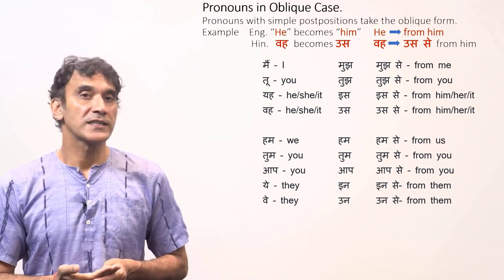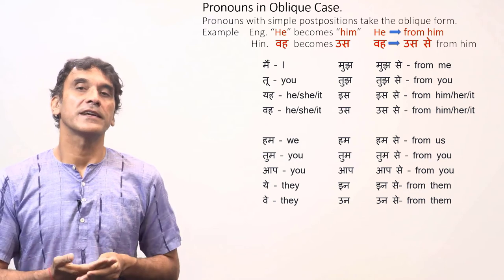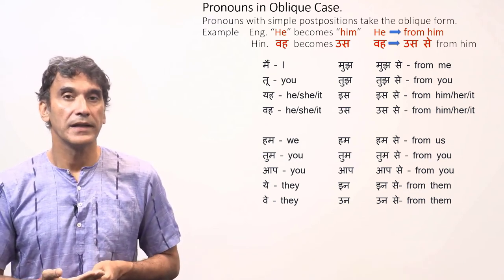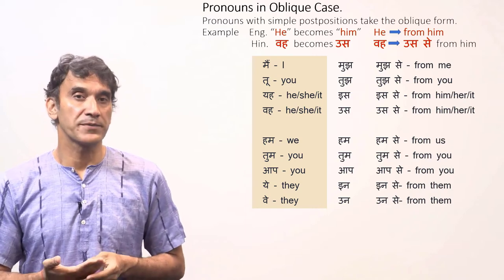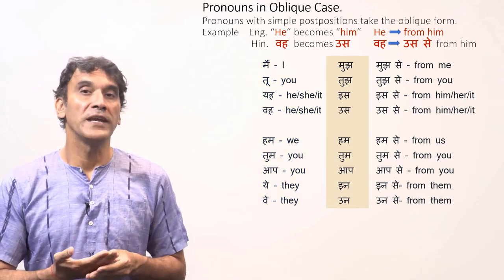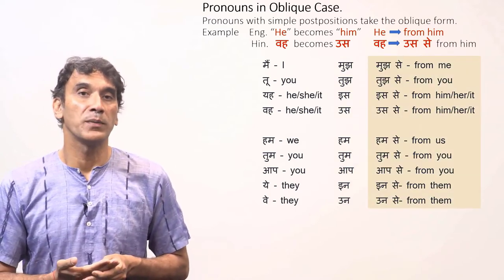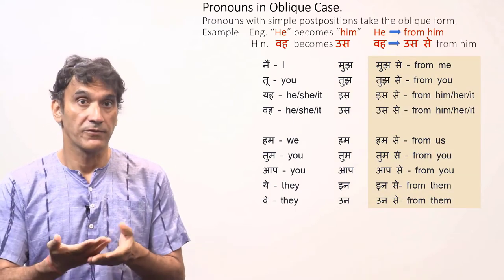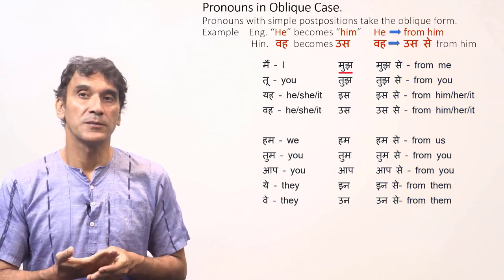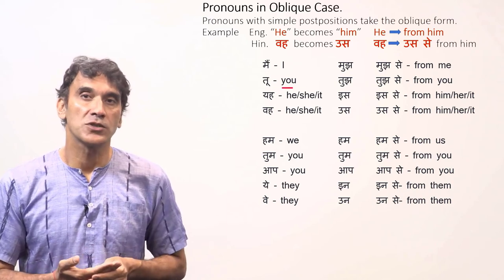Here we have a table of all the subject pronouns in oblique case, using the postposition 'से' (meaning 'from') as an example. In the first column we have subject pronouns, in the second column the oblique forms, and in the final column the pronouns in oblique case with 'से'. मैं (I) becomes मुझ — 'मुझ से' means 'from me'. तू becomes तुझ — 'तुझ से' means 'from you'.